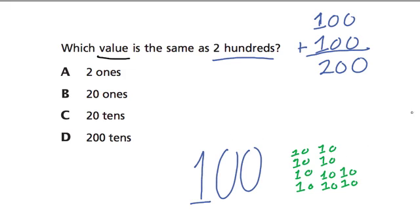So if I have two hundred, it makes sense to think that I have twice as many tens. So two hundred will equal twenty tens, just as one hundred equals ten tens. And that tells me the answer here, which is C, or twenty tens.